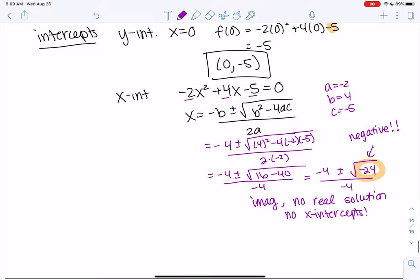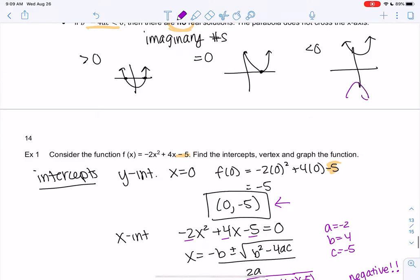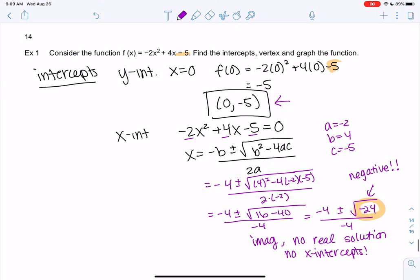So we're going to have a graph above the x-axis. It's going to go through 0, negative 5. And I think if we have the vertex, that should be enough to graph. Sorry, above or below. It can be below. We could also have one down here. It just doesn't cross the x-axis. So let's find the vertex.